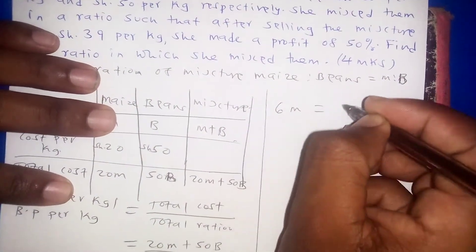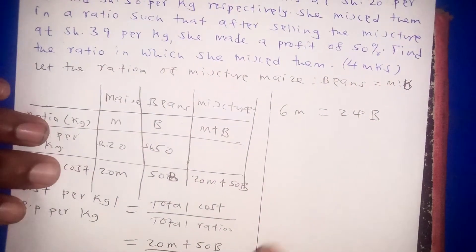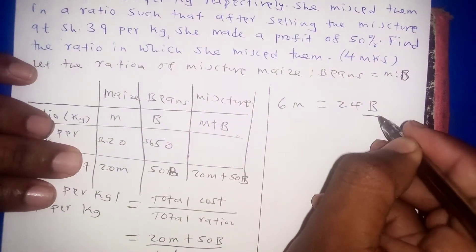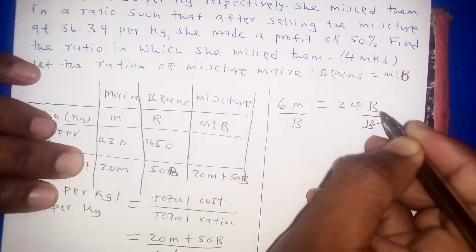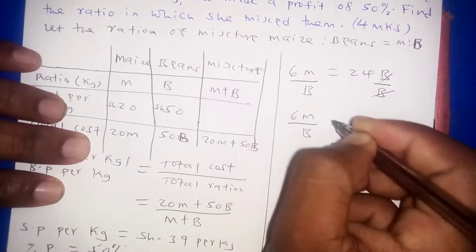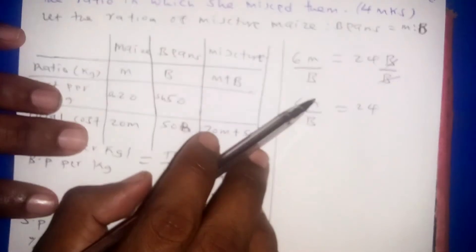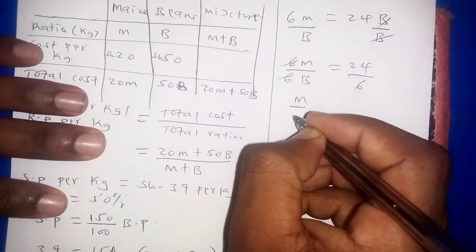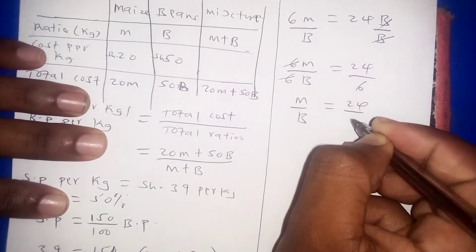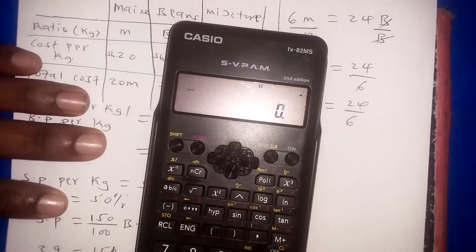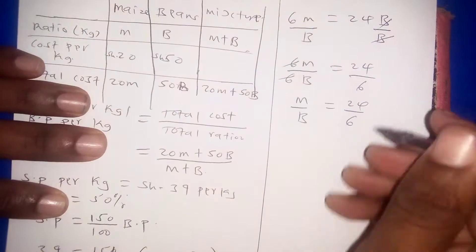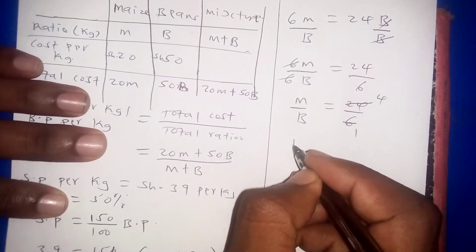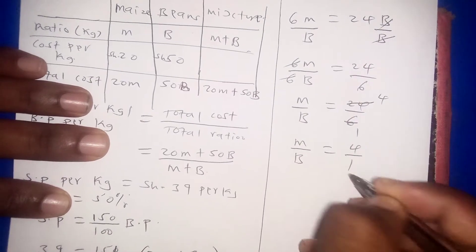We want the ratio of maize to beans. From 6M = 24B, divide both sides by B to get 6M/B = 24, then divide by 6 to get M/B = 24/6 = 4. So M/B = 4/1. Remember a ratio must be in its simplest form.